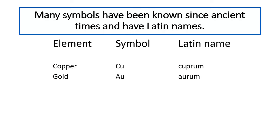Many symbols have been known since ancient times and have Latin names. The element copper, its symbol is Cu because of its Latin name, which is cuprum. Gold, the symbol is Au. Its Latin name is aurum. Potassium, K, kalium. Silver, Ag, argentum. Sodium, Na, natrium. This language called Latin was spoken by the Romans. Some of these elements were discovered during the Romans' time and they named them with Latin words. That is why we have symbols that don't match up with our English language names.